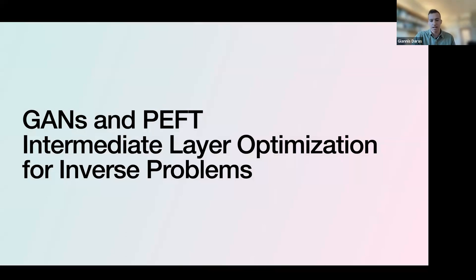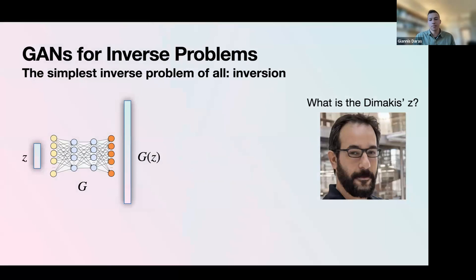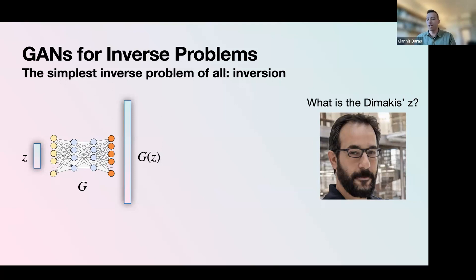Let's start with GANs. We'll discuss an idea we called intermediate layer optimization, which we now think of as a form of parameter-efficient fine-tuning. We think of a generator G as a box that takes a low-dimensional latent vector z and outputs a high-dimensional image G(z). We want to solve a simple inverse problem: is there any z in the latent space that produces something close to, say, a photo of my advisor? We optimize over all z to minimize the error between G(z) and the target image x.